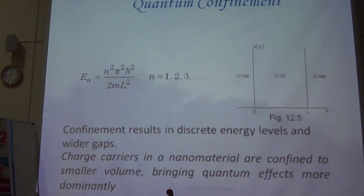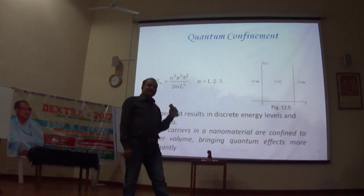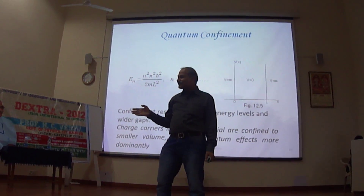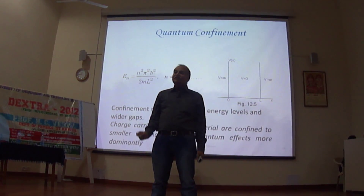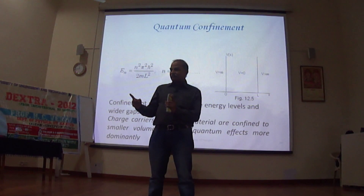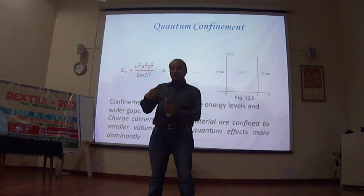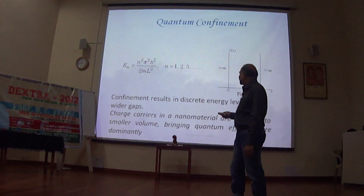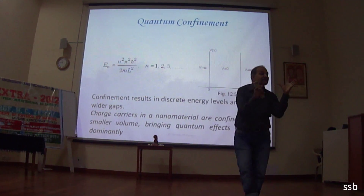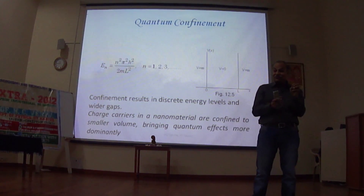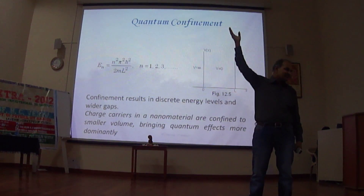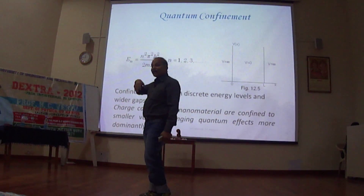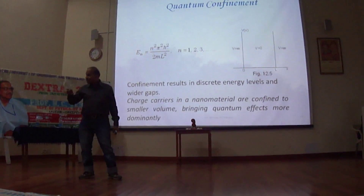The second reason is quantum mechanics. The simplest example is the infinite square-well potential — you confine the particle to a certain width and it cannot go beyond. What happens to the energies? The energy levels become discrete. This is like the hydrogen atom — an electron confined by the electrostatic force of the proton, giving discrete energy levels. This is quantum confinement. Once you confine a particle to a small volume, the uncertainty principle and all the associated physics comes into picture. So these are basically the two reasons: surface effect and quantum confinement.